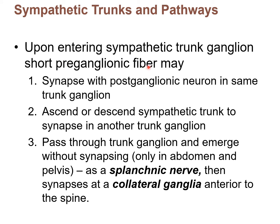Now, a pre-ganglionic fiber — by the way, when we say pre-ganglionic fiber, we mean neuron or axon. Pre-ganglionic axon, pre-ganglionic neuron, or fiber. When it enters the sympathetic chain or sympathetic trunk chain ganglia, three things can happen. I'm going to go to the pictures to go through these three possibilities individually.